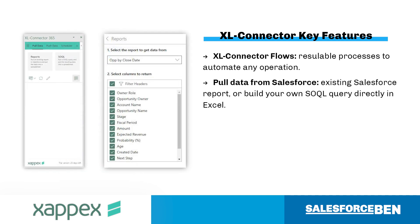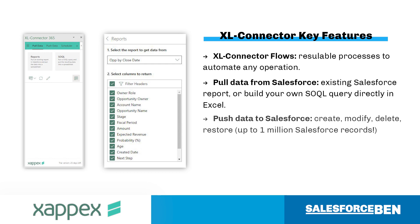You can choose between pulling an existing Salesforce report into Excel or building your own SOQL queries directly in Excel. Pushing data to Salesforce could be creating and modifying records, or deleting and restoring records. Excel Connector can handle up to 1 million Salesforce records, and you can view operation results and add admin controls to data too.